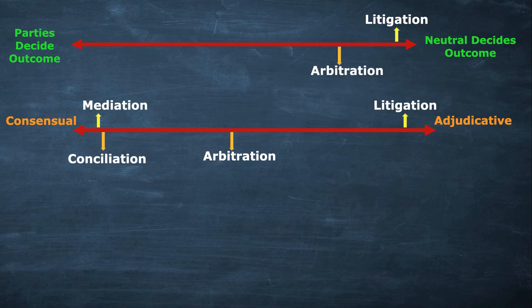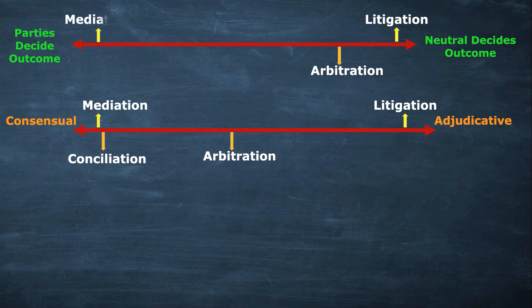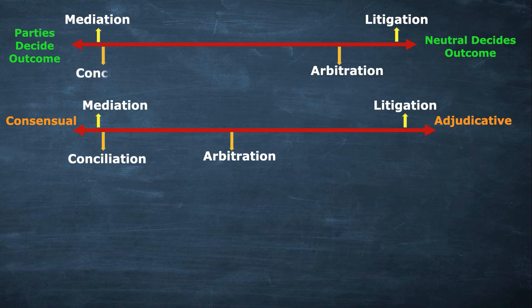Next is arbitration — the party has very little control because it is the arbitrator who decides. Then comes mediation — see how close it is to the 'parties decide outcome' side and how far it is from 'neutral decides outcome,' because in mediation the parties themselves decide the outcome completely.